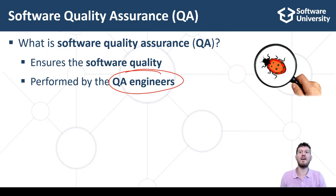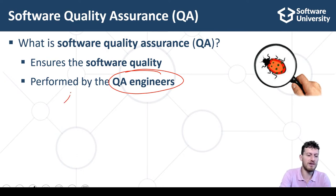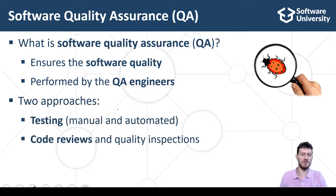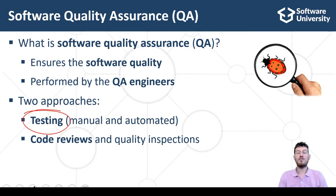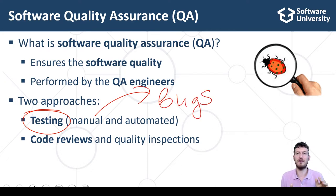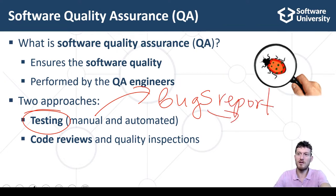The software quality assurance is performed by QA engineers. QA engineers test the software, its functionality, usability, security and other aspects, report and track bugs and track the development process and its quality. In the heart of the QA process is software testing — the process of checking whether the software conforms to the requirements and works as expected. Software testing aims to find bugs or defects in the software and report them for fixing.